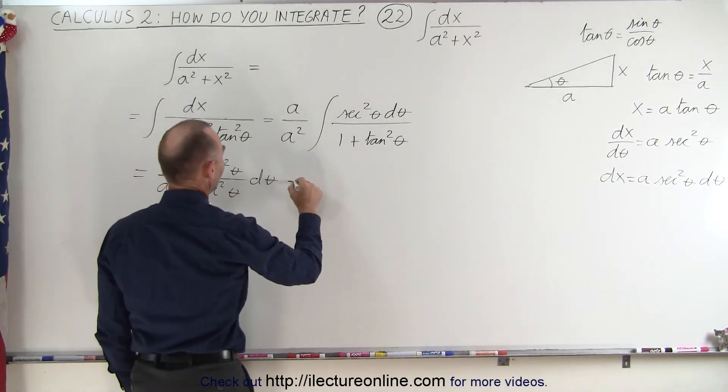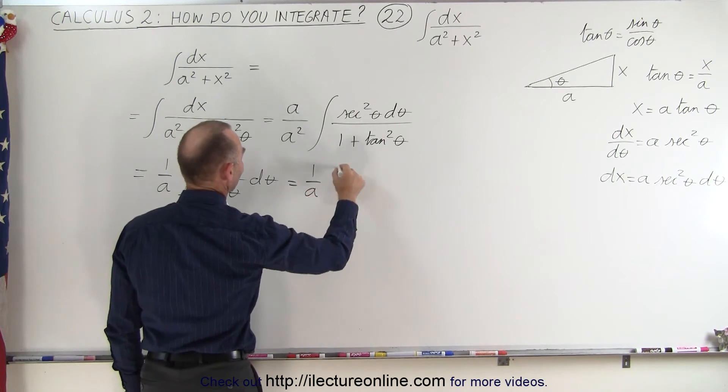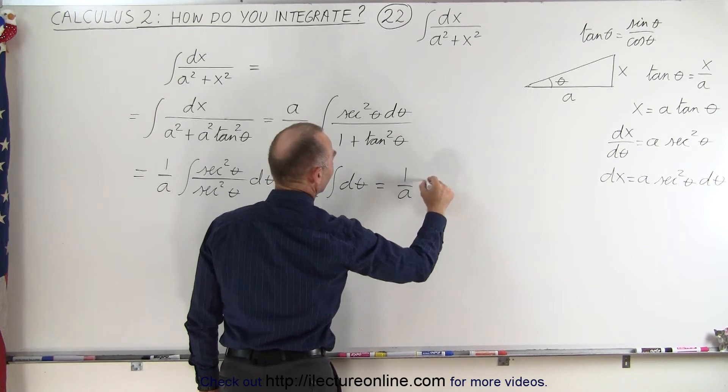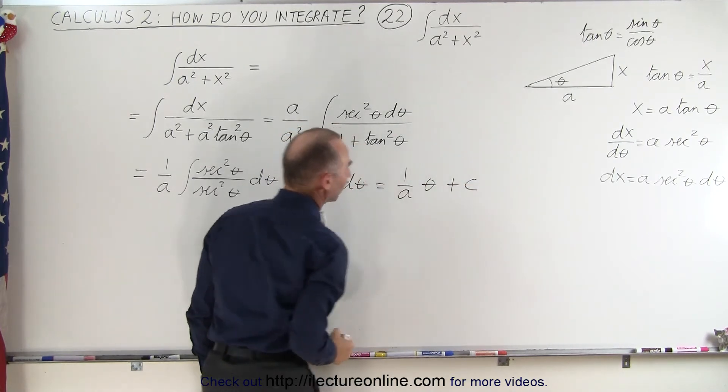That of course becomes 1, and this is equal to 1/a times the integral of dθ, which means that this is equal to 1/a times θ plus a constant of integration.